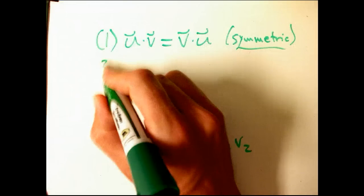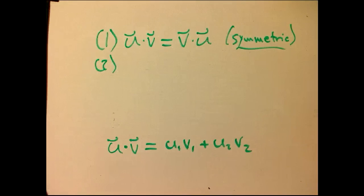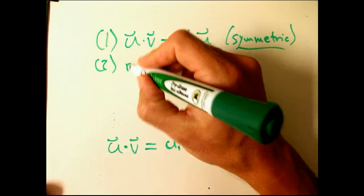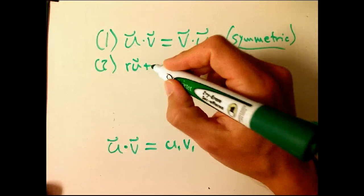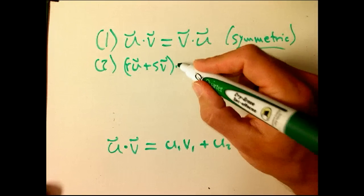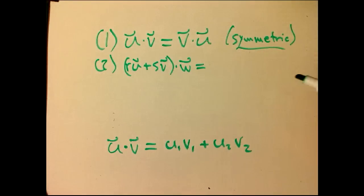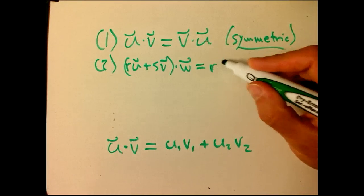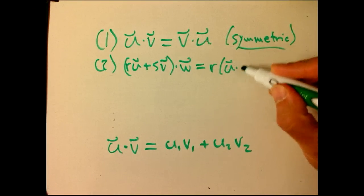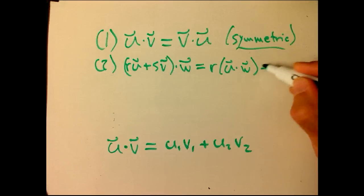Then, second property is that it respects scalar multiplication and addition, the two basic vector operations that you have with vectors. So if R and S are scalars,